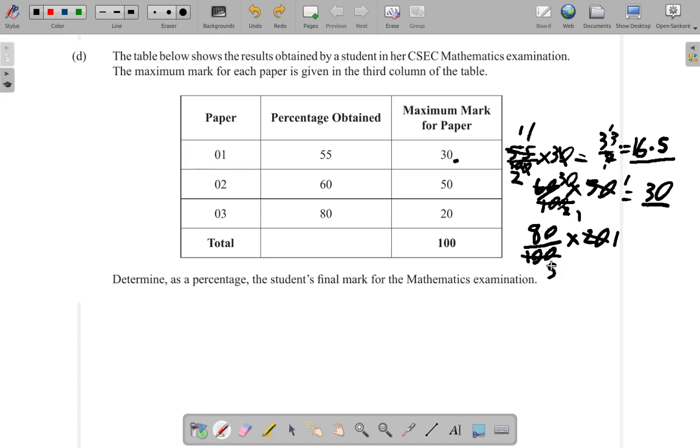So it's 80 over 5. 5 into 5 is 1, 5 into 80: 5 into 8 goes 1 time remainder 3, 5 into 30 goes 6. So she got 16 marks.